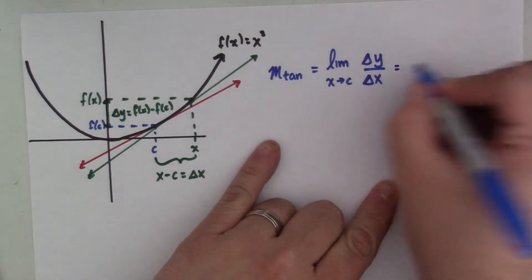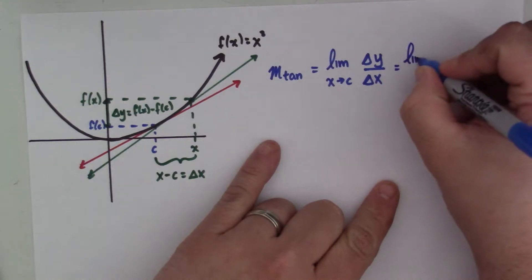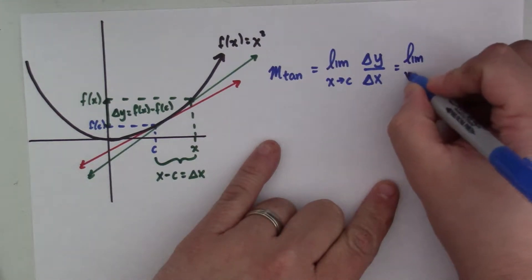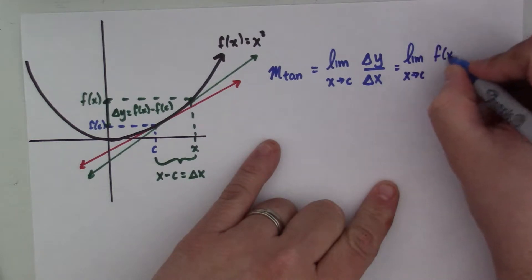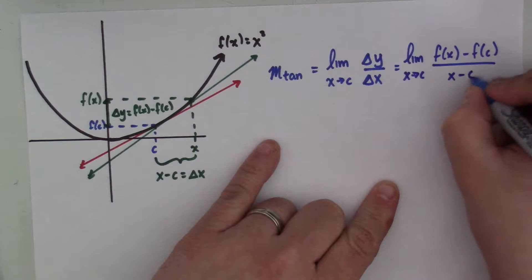And what we then can say is we can just rewrite this as the limit as x goes to c of f of x minus f of c over x minus c.